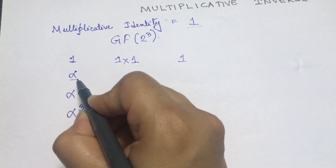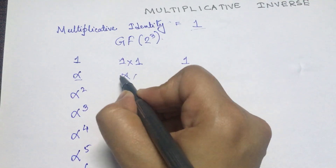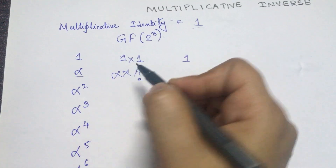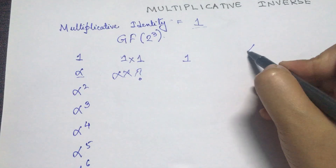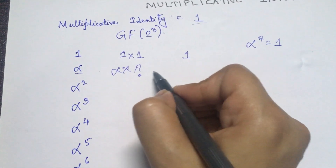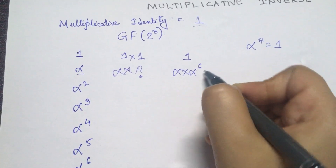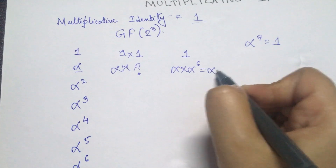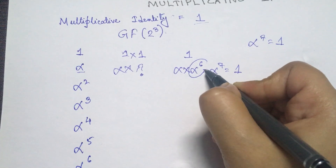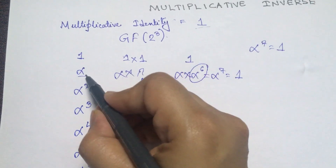What should we multiply with α such that we get back 1? We know α⁷ = 1. So if we write α × α⁶, that gives us α⁷ which is 1. Therefore, we can say that α⁶ is the multiplicative inverse of α.